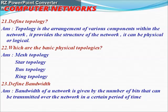Next question: define topology. Topology is the arrangement of various components within the network. It provides the structure of the network and can be physical or logical. Which are the basic physical topologies? The basic physical topologies include mesh topology, star topology, bus topology, and ring topology.